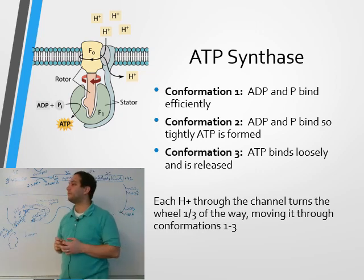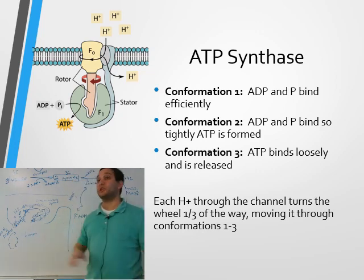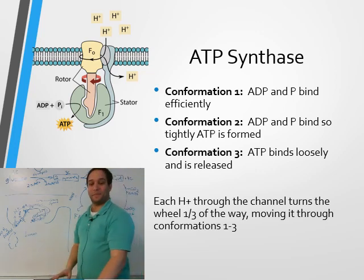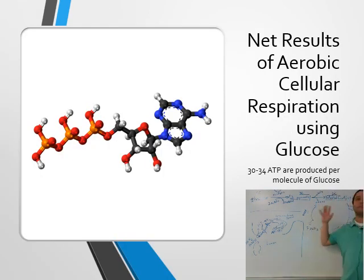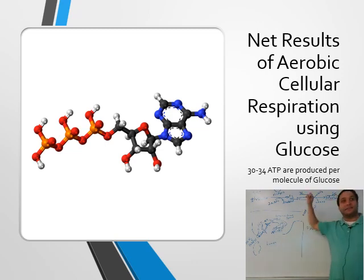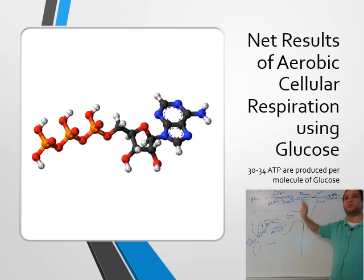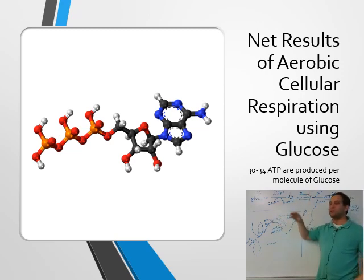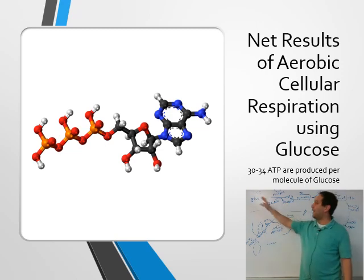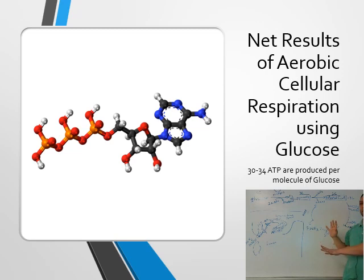The net result of the whole process is you're now producing 30 to 34 ATP. You're taking the energy of one molecule of glucose and, through all four steps, converting it into 30 to 34 ATP. The range depends on how efficient the system is — different environmental factors can change things.